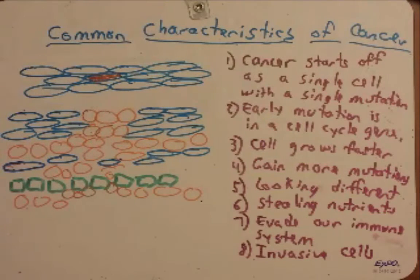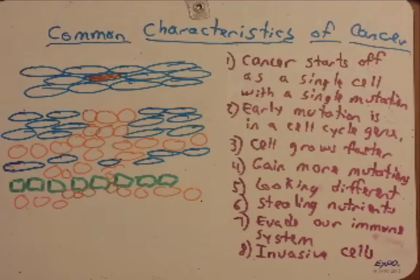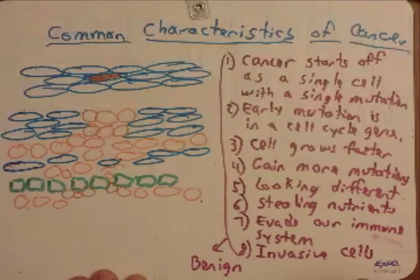At this point, we're looking at this fairly large mass of cells that have taken over these tissues. At this point, particularly early on when it's just in these epithelial cells, we call this a benign tumor. Technically, at this point, we wouldn't even call it a cancer yet because it hasn't started to spread.